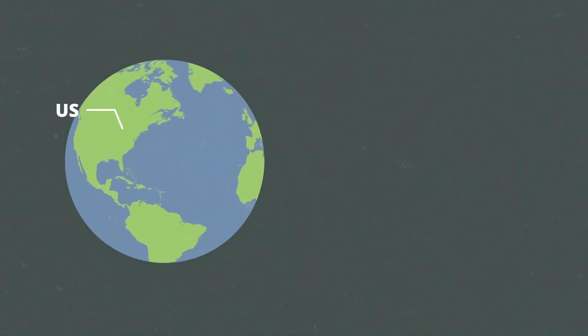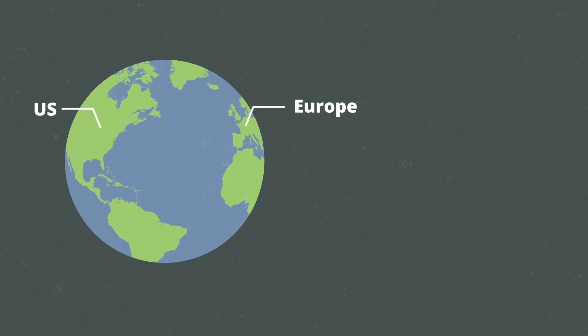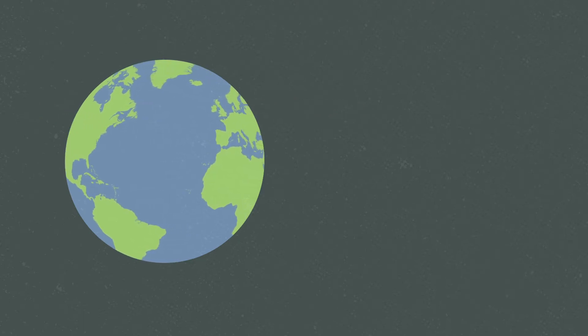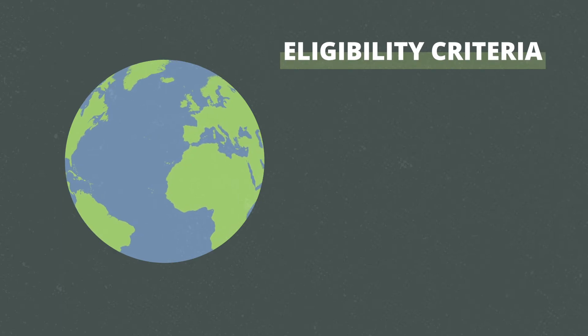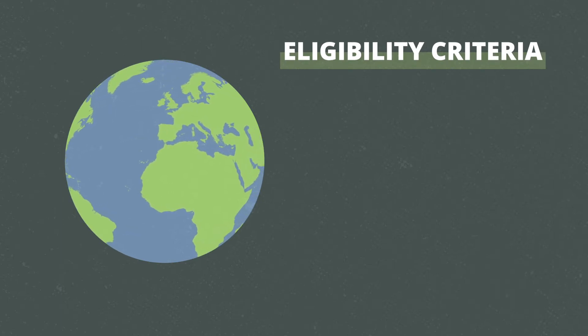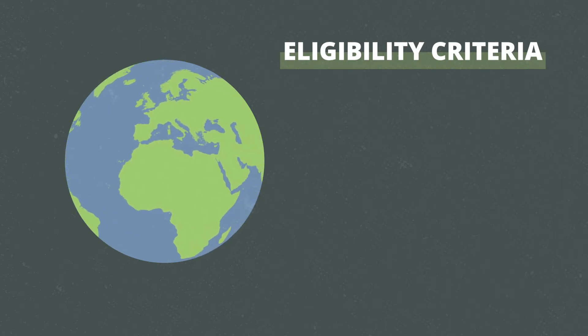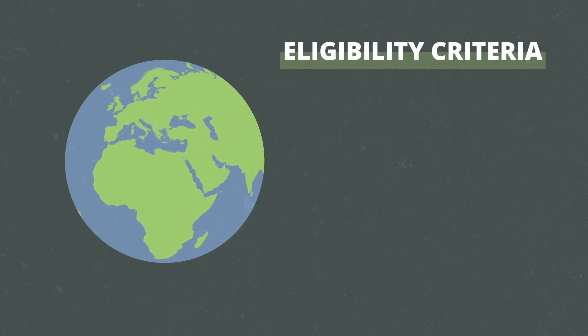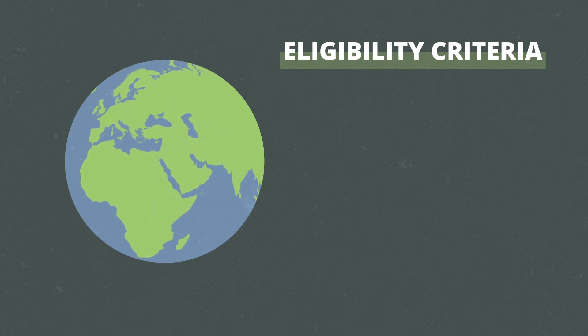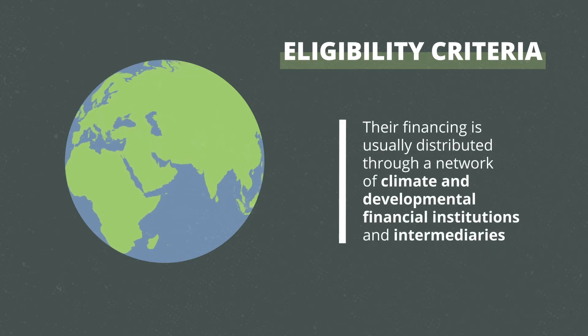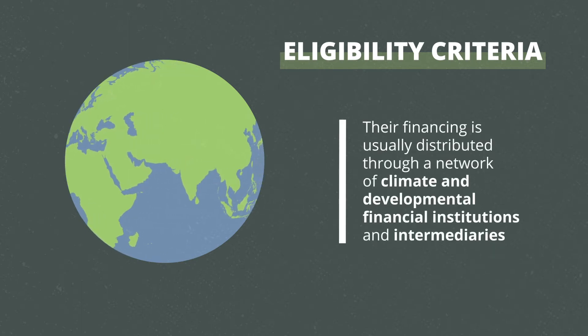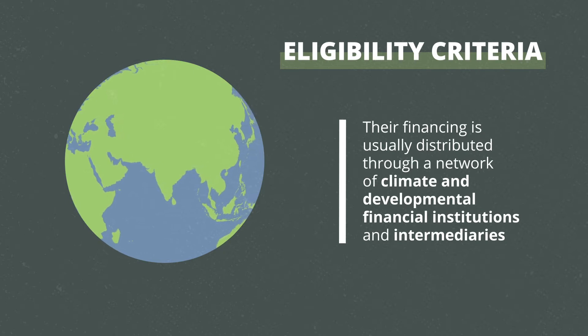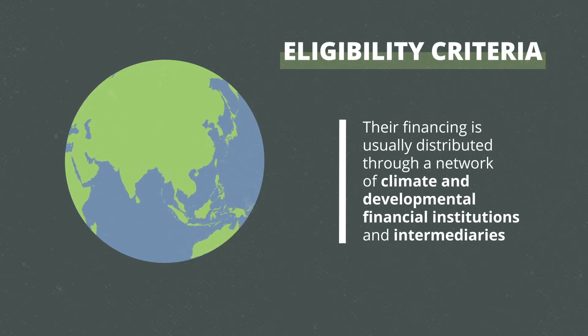Climate finance is provided by public, private and philanthropic sources, mostly from developed regions like the US or Europe. Each of these regions have a certain set of eligibility criteria in the context of meaningful mitigation actions and transparency on implementation. They also have unique benefits and costs, and their financing is usually distributed through a network of climate and developmental financial institutions and intermediaries.